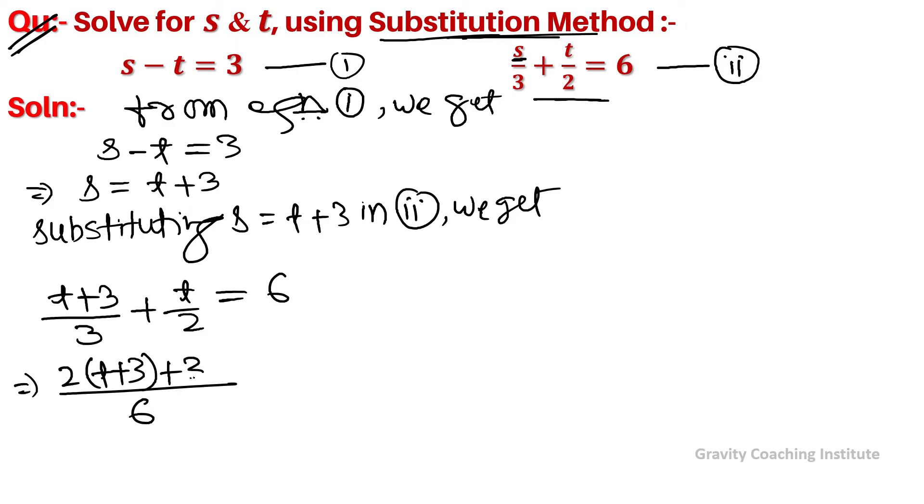This gives (2(t + 3) + 3t)/6 = 6, which becomes (2t + 6 + 3t)/6 = 6.